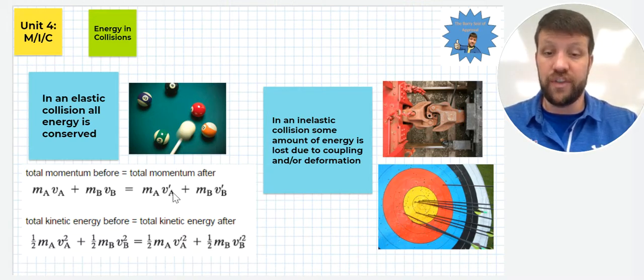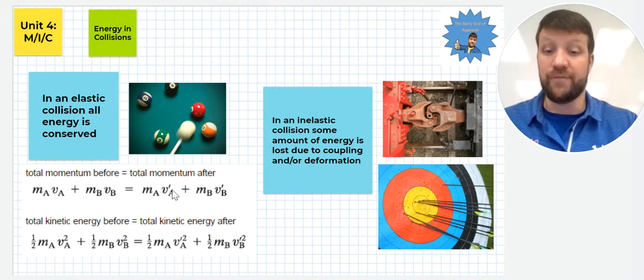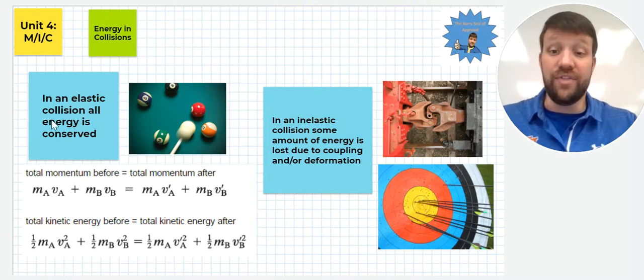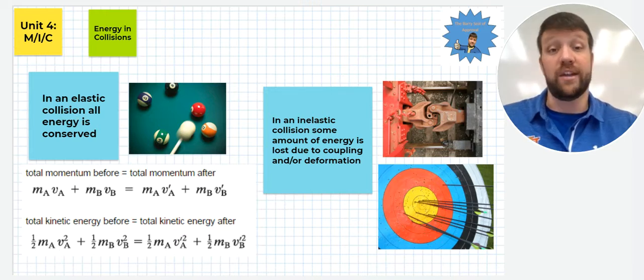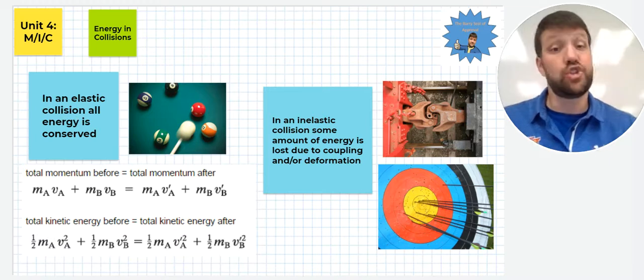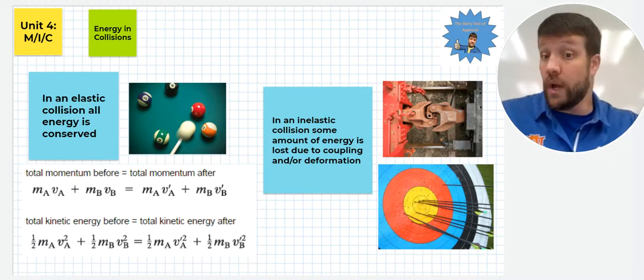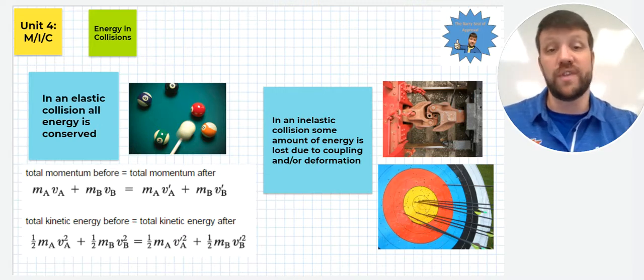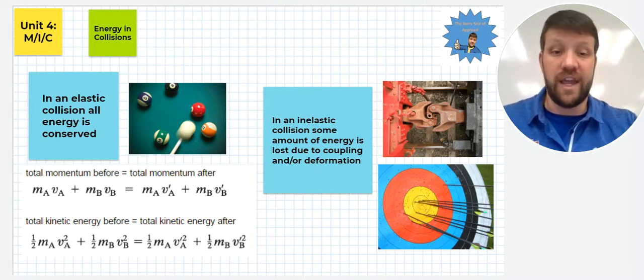You see this little apostrophe here. This just denotes the velocity of A before without it and the velocity of A after with it. The masses are going to remain the same as we talked about. In this case, in an elastic, the total kinetic energy before will also equal the total kinetic energy after. That's really helpful because that gives us two equations potentially to help solve for some of these quantities. That makes solving for them a lot easier. We can solve simultaneous equations in that case.